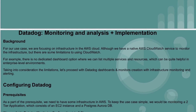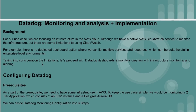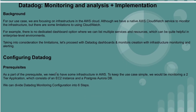For our case, we are focusing on infrastructure in the AWS cloud. Although AWS has a native CloudWatch metric service to monitor infrastructure, there are some limitations. For example, there is no dedicated dashboard option available in CloudWatch where we can list multiple services and resources together. If you're familiar with CloudWatch, you'll understand — otherwise, you can refer to my CloudWatch video in the AWS playlist. We are going to see how to create a Datadog account and integrate it with AWS in the next video.